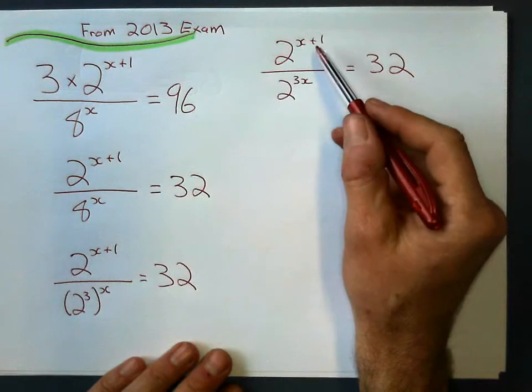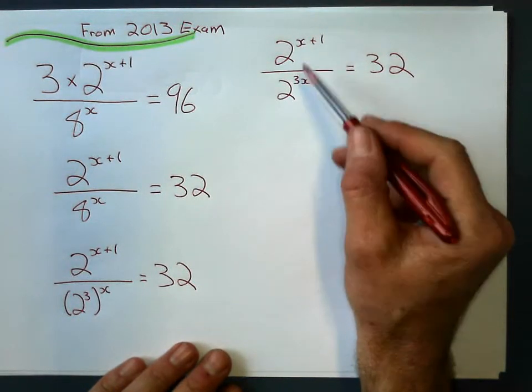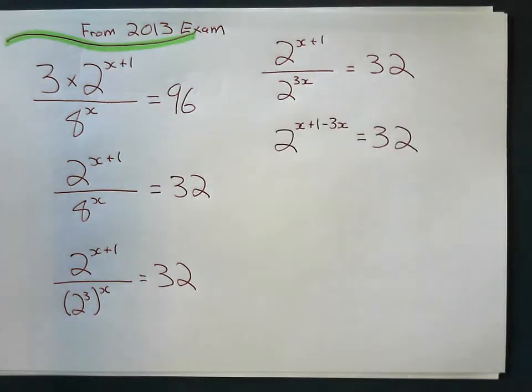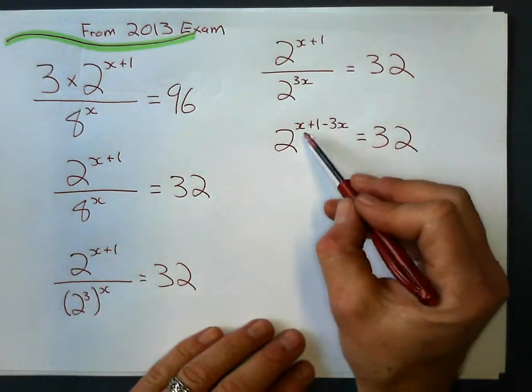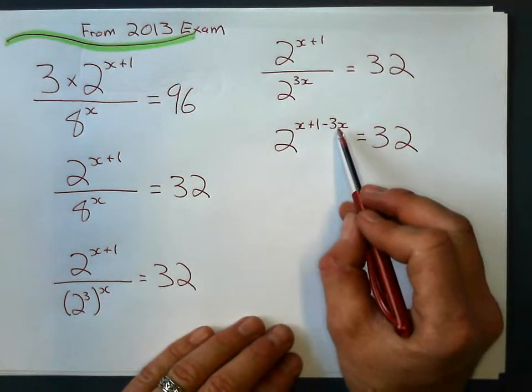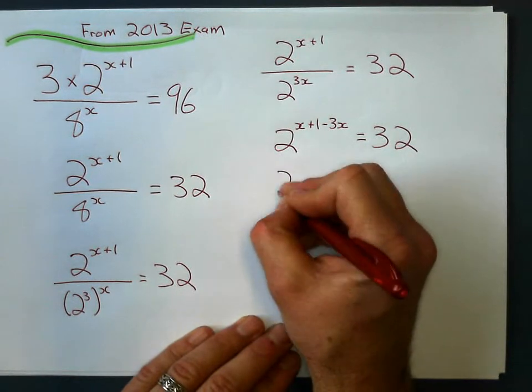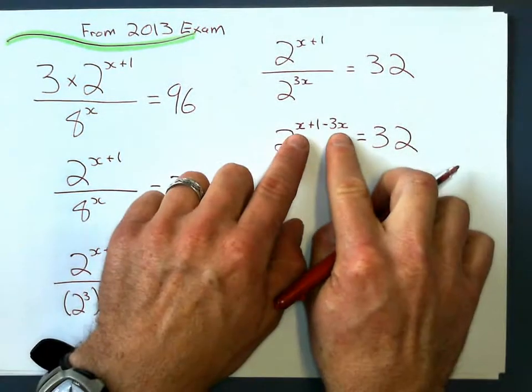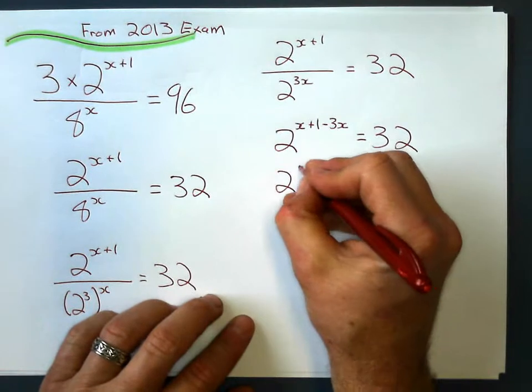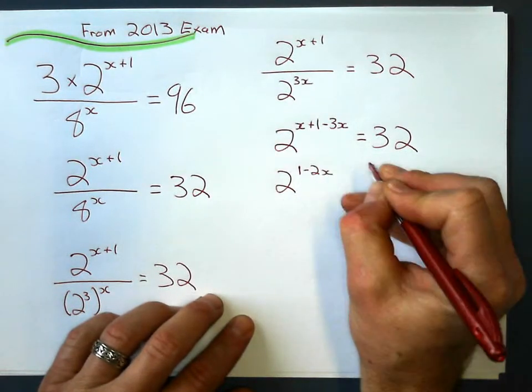And like the previous problem, dividing powers, I subtract the exponents. So I subtract the exponents, you get x plus 1 minus 3x. Collect these like terms, x minus 3x is minus 2x, so this is 2 to the power of 1 minus 2x.